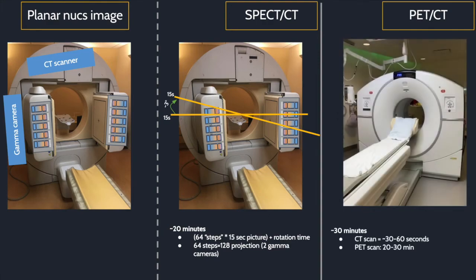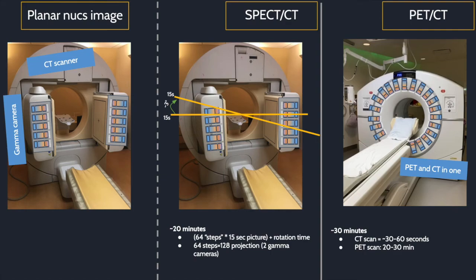This is a PET scanner which contains both the detector and the conventional CT in one housing. Detectors are circumferentially around the patient, seen here. A PET takes about 15 to 30 minutes, and the CT portion takes about 30 seconds or so.